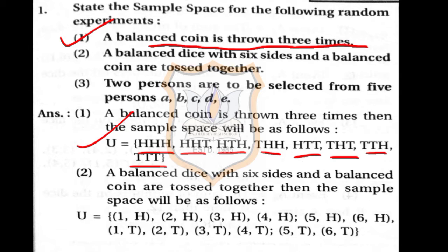The next question: a balanced dice with six sides and a balanced coin are tossed together. That means you are rolling a dice and tossing a coin simultaneously. When you roll the dice you may get 1, 2, 3, 4, 5, or 6.